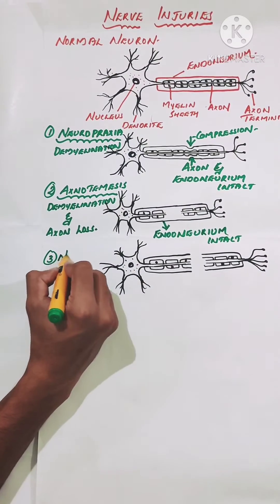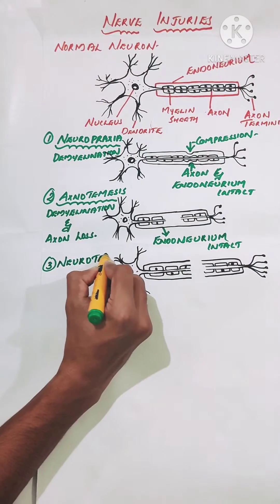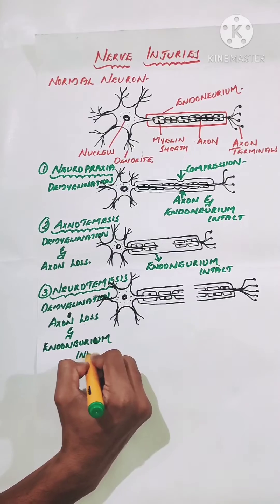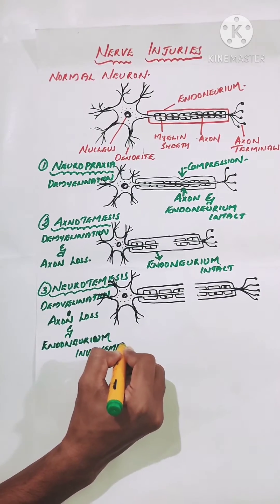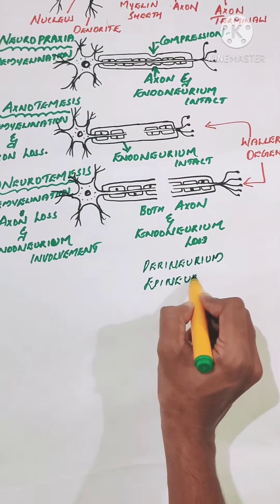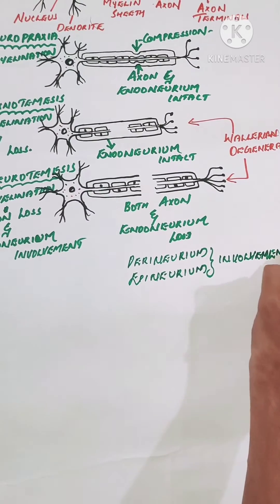Now let's have a look at neurotemesis. In these cases, we can see a complete cut of the neuron or nerve. Here, the axon, myelin sheath, and the entire endoneurium, perineurium, and epineurium are all damaged.